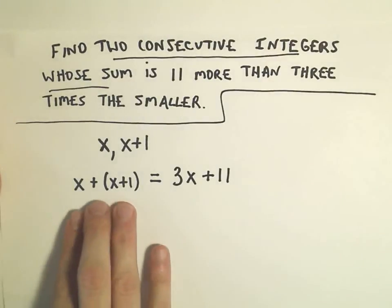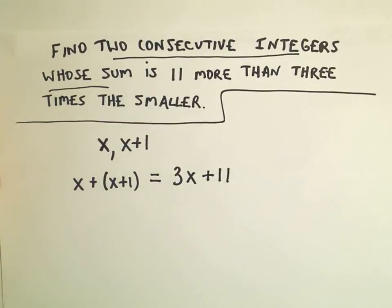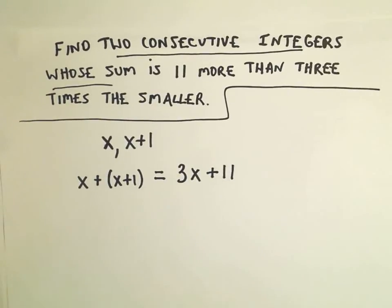We have the sum of two consecutive integers that's 11 more than 3 times the smaller. Now it's just a matter of doing the algebra and solving for x.